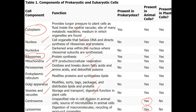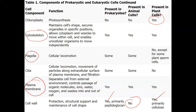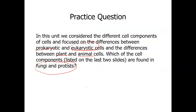Centrosome — yes, we can check that because it's found in fungi and protist. Lysosomes are found in fungi and protist. Chloroplasts are not, but the cytoskeleton is. Flagella is, cilia can be, plasma membrane, and cell wall — so pretty much everything.